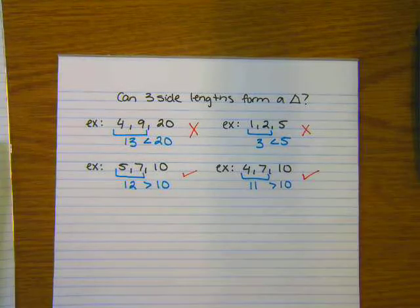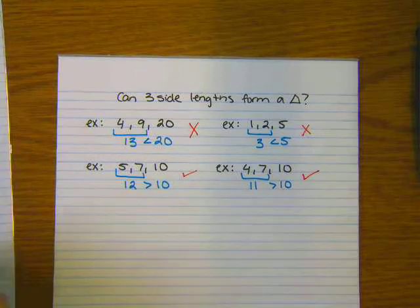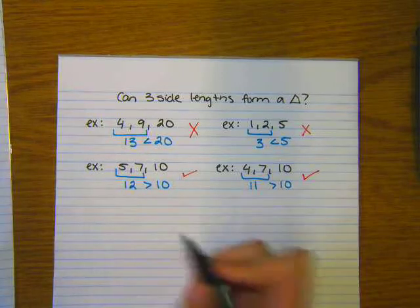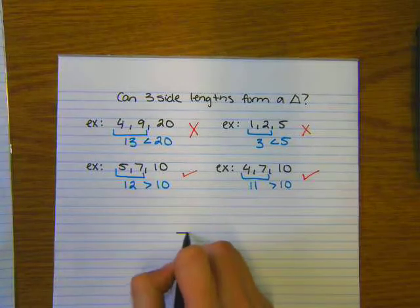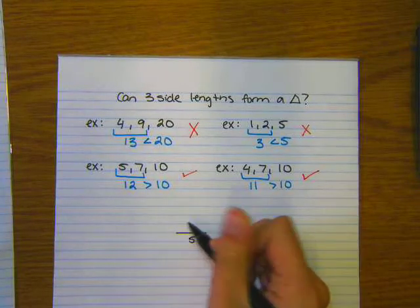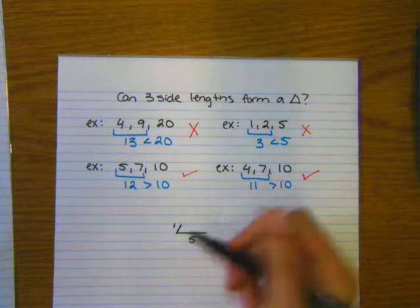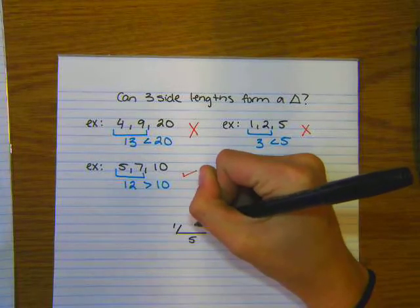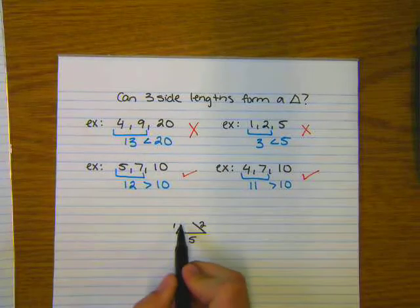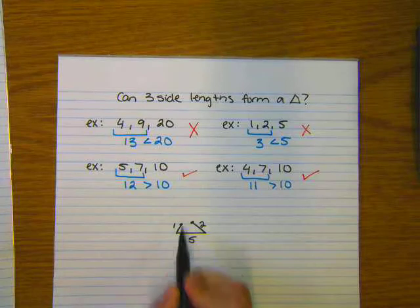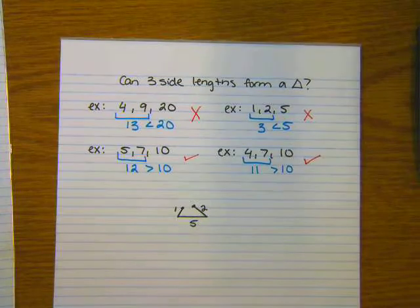The reason we want to do this, so let's take one of our examples that did not work. So let's do the 1, 2, and 5. So if this side length here, if I were to draw a picture and say this is my 5, this would be my side length that is 1, and let's say this is my side length that is 2. These two do not meet. They don't touch, so this is not an actual triangle. So this is just an example as to why it does not work.